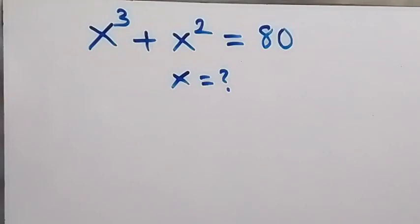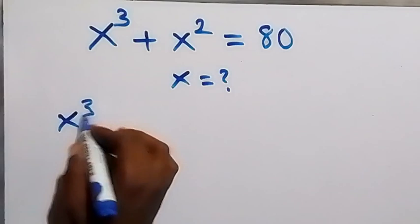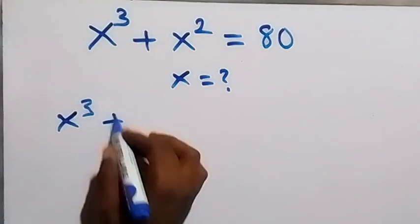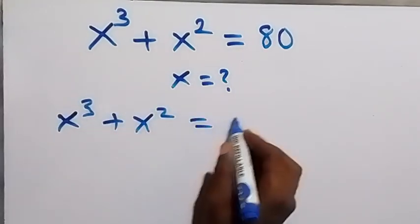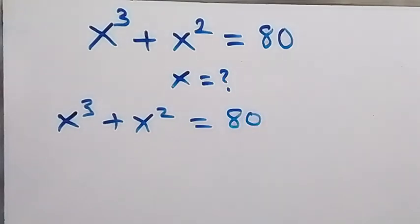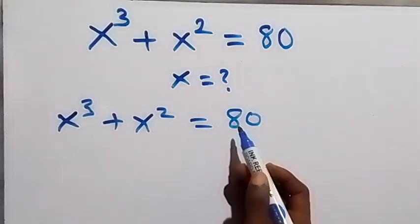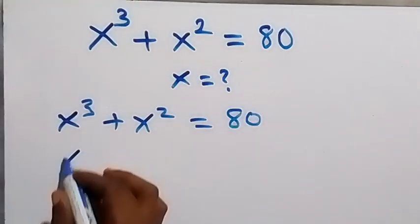Hello, you are welcome. How to solve this nice algebra equation: we are given x³ + x² = 80. Let's take 80 to this side and this will become x³ + x² − 80 = 0.